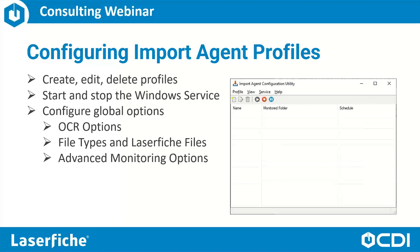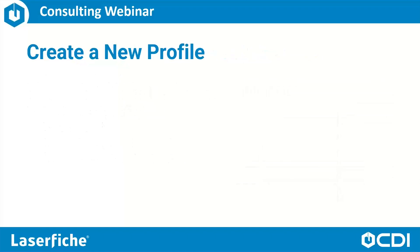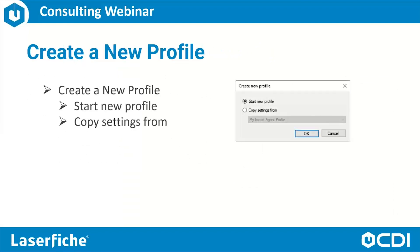To get started using Laserfiche Import Agent, we need to use the Import Agent Configuration Utility. This utility allows us to create, edit, and delete Import Agent profiles. We can start and stop the Import Agent Windows service from the utility, and we can also configure various global options such as OCR options, imported file types, and advanced monitoring options. To create a new profile, we can either start a new empty profile or copy settings from an existing profile.